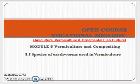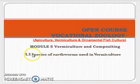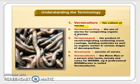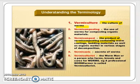Welcome students to our third video section on vermiculture. In this section we will be discussing the different species of earthworms used in vermiculture. Vermiculture is purely the culture of worms. Vermicomposting is the use of worms for composting organic materials. Vermicompost is the product obtained from the vermicomposting process. Vermicast is the excreta of the worms, and the person who does vermiculturing is called a vermiculturist.